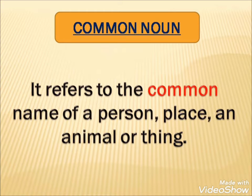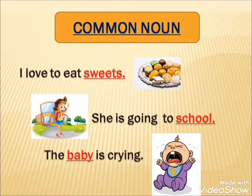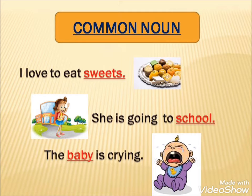Here, Common Noun. What is a Common Noun? It refers to the common name of a person, place, an animal or thing. For example: 'I love to eat sweets.' 'She is going to school.' 'The baby is crying.' As you can see, some words are underlined. Sweets, school and baby are common nouns — they are the common name of a person, place and thing.